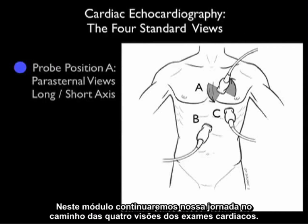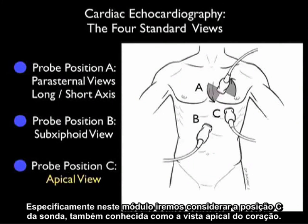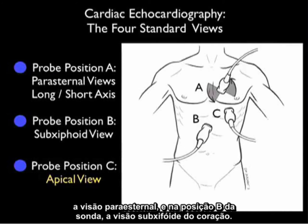In this module, we'll continue our journey down the path of the four cardiac examination views. Specifically, we're going to look at probe position C, known as the apical view of the heart. I hope you've been able to join me prior for looking at probe position A, the parasternal views, and probe position B, the subxiphoid views of the heart.